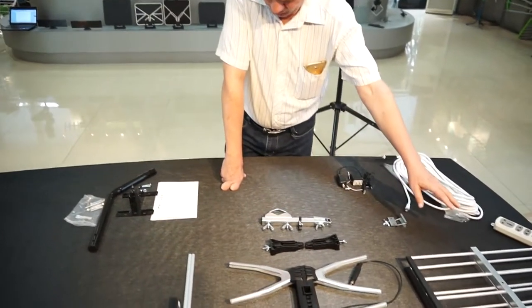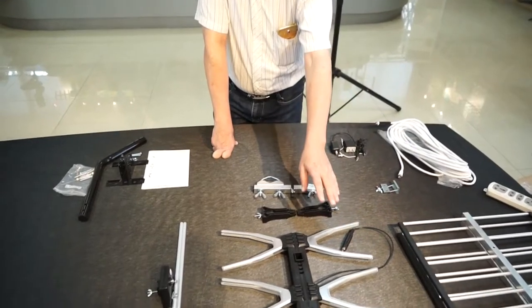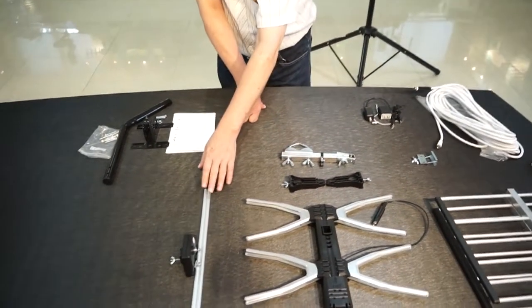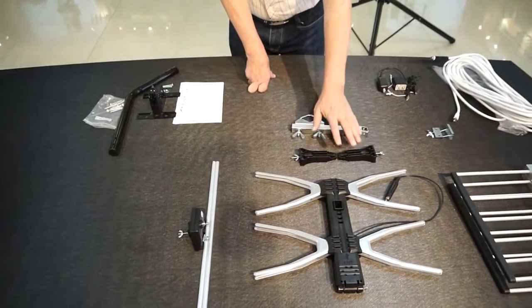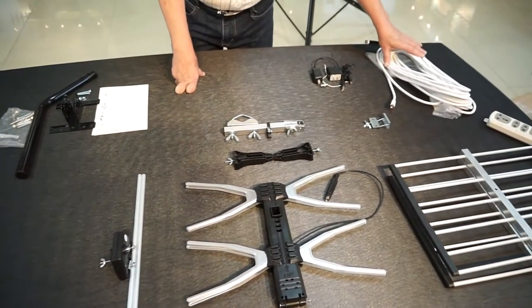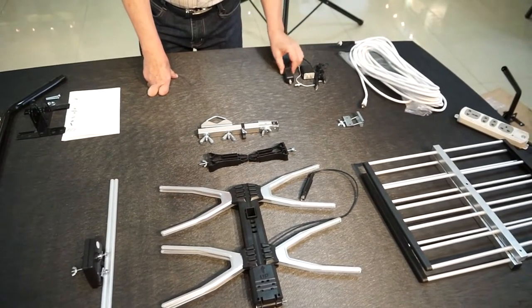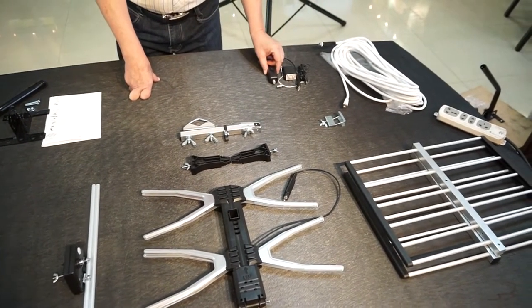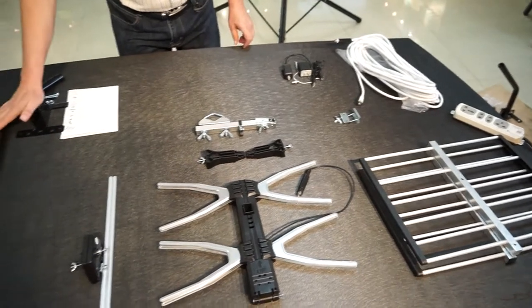The components are the reflectors, the UHF dipole, VHF dipole and Allen, the director clips, the antenna bracket, the actual cable, power supply, and the power supply unit, also an antenna mount.